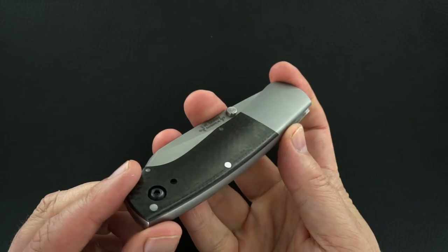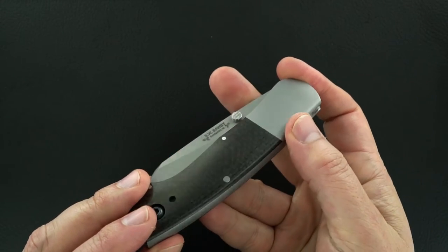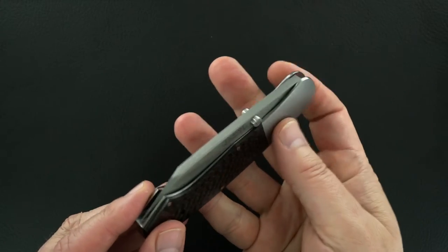This one's carbon fiber scales, steel liners slash integral bolsters.